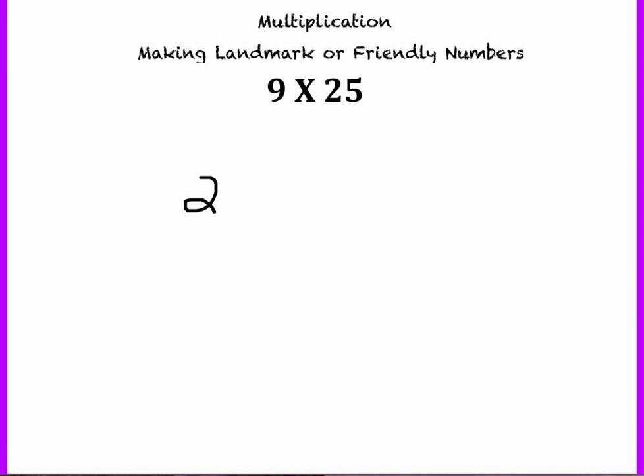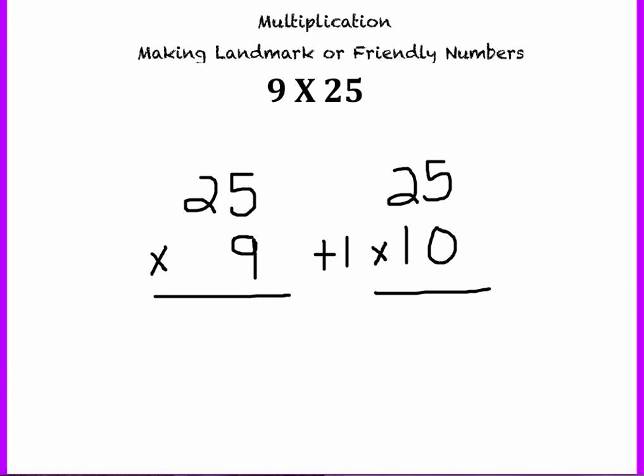they could create a landmark number by changing the 9 into a 10. You would have to add 1 to that 9. And then you would have 25 times 10. But remember that it's not just adding the number 1, that you're adding a group of 25.